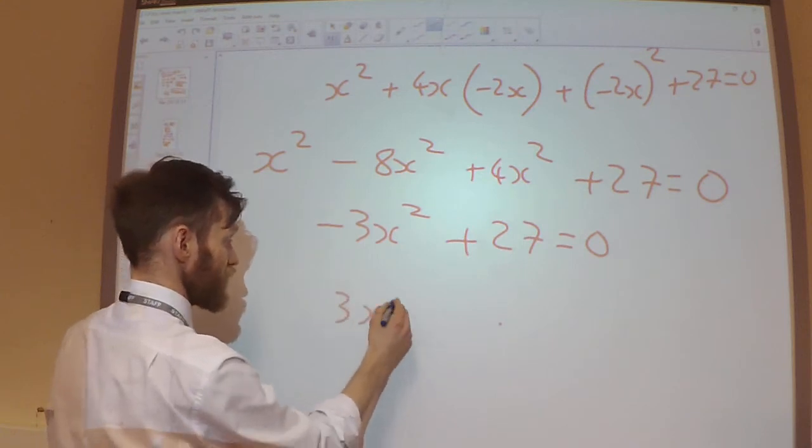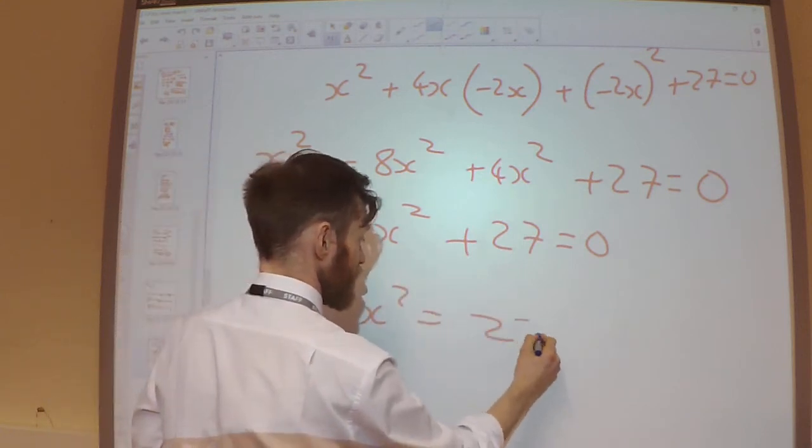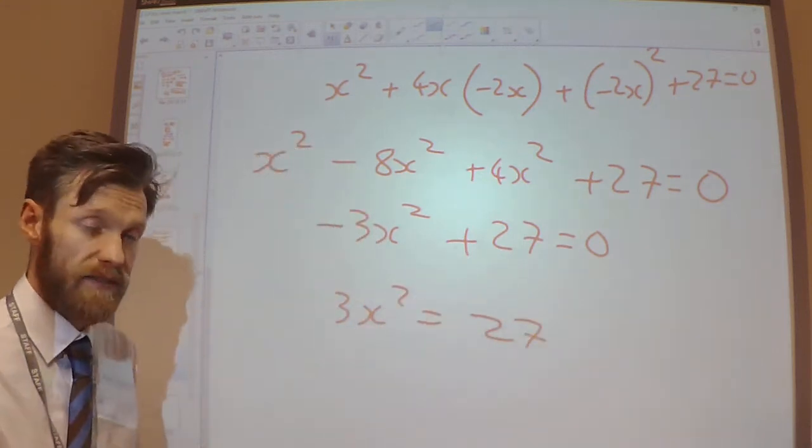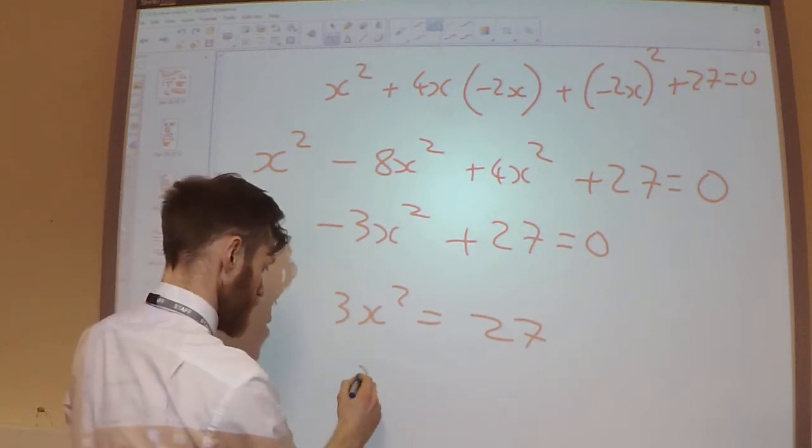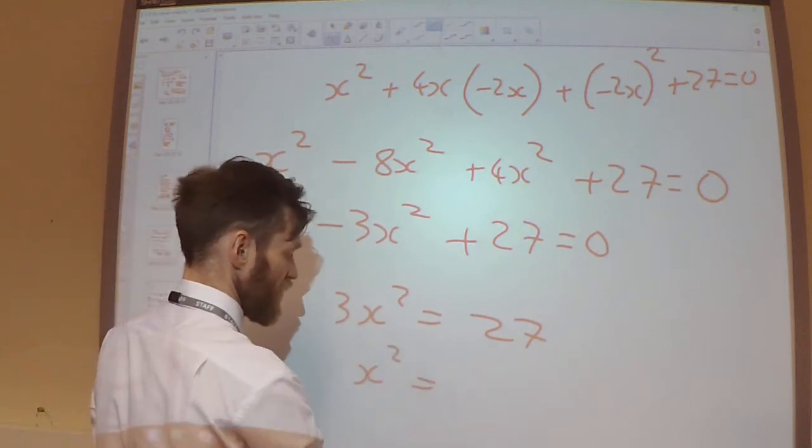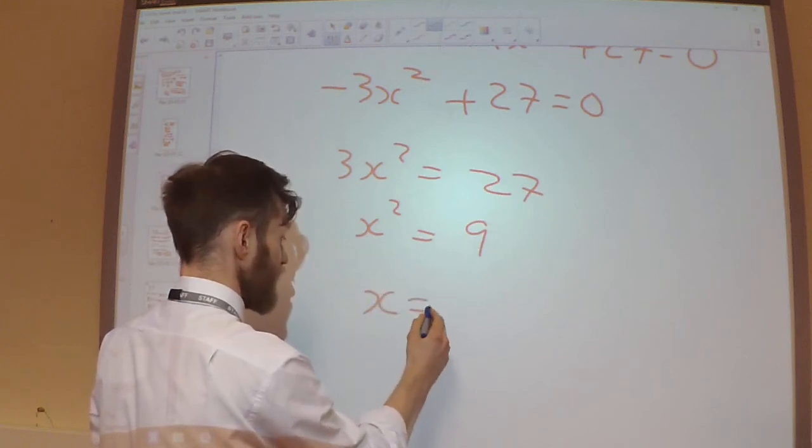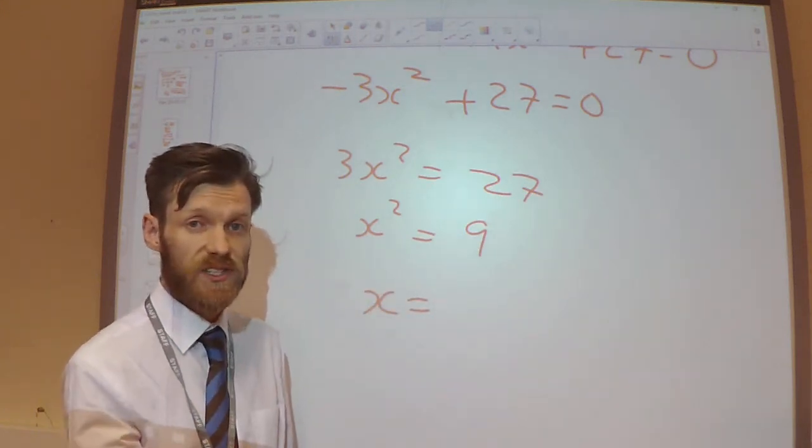So 3x squared has to be equal to 27, just taking that to the other side. So x divided by 3. So x squared is 9. So x is plus 3 or minus 3.